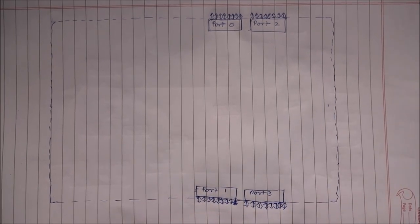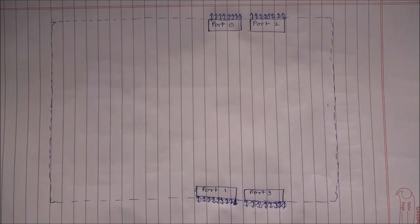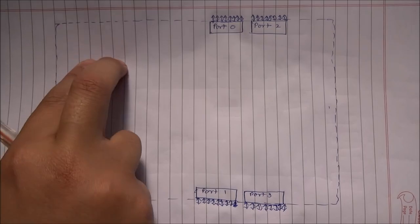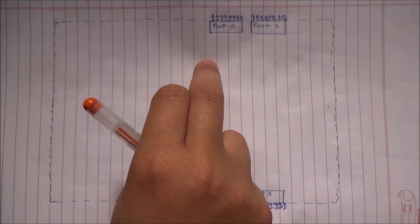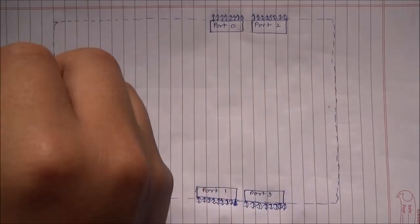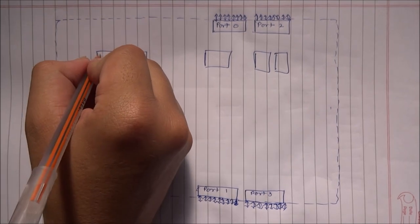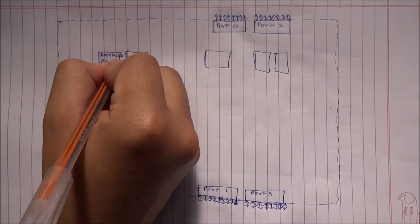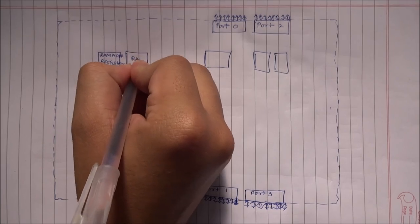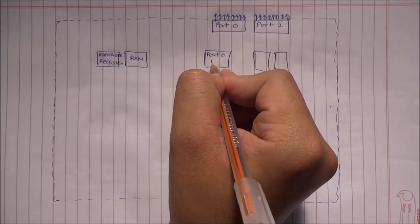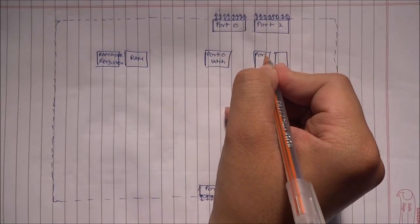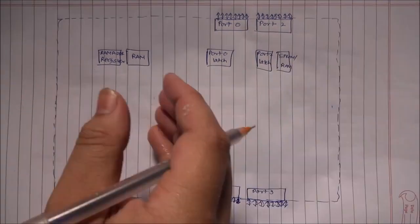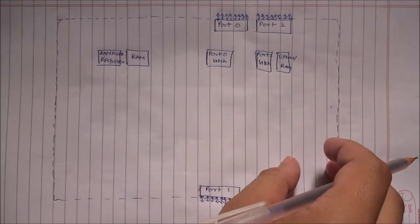Now I have drawn all of the ports. Now it's time to make some blocks in between these. So here we have five blocks: two of which are here, two of them are here, and one is in between this pair of two blocks. The first block is a RAM address register, the second one is the RAM, third one is the port zero latch, the fourth one is the port two latch, the fifth one is the EPROM or simply ROM.